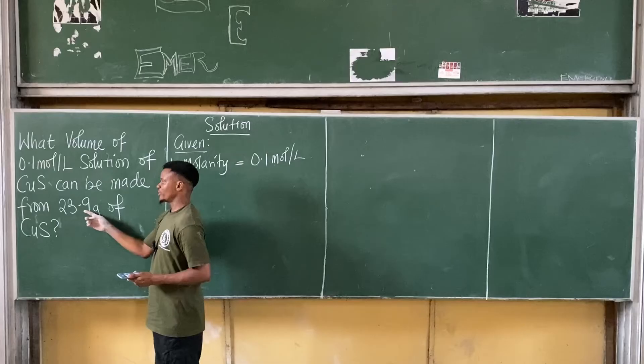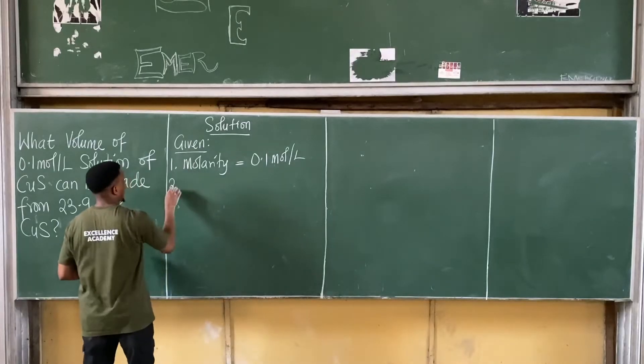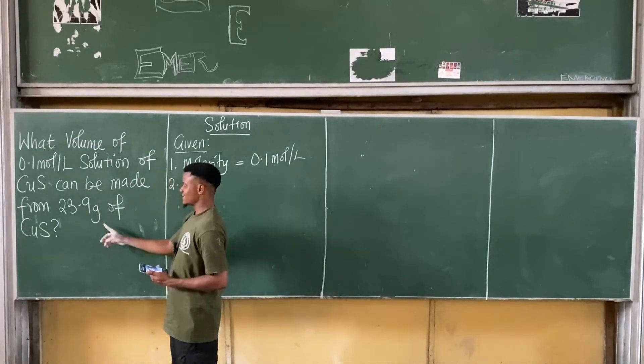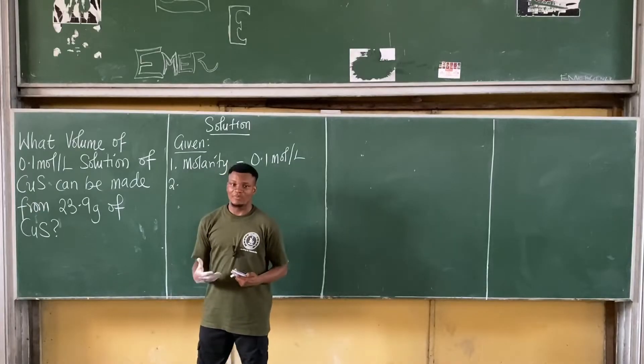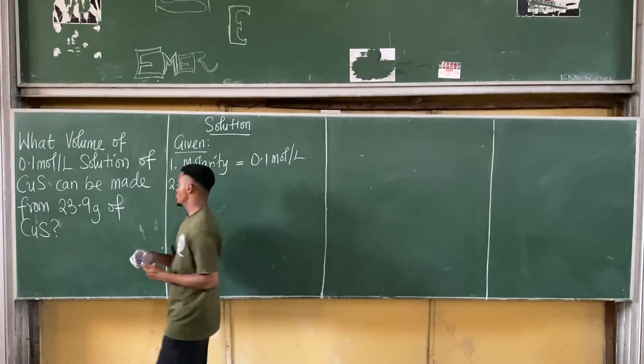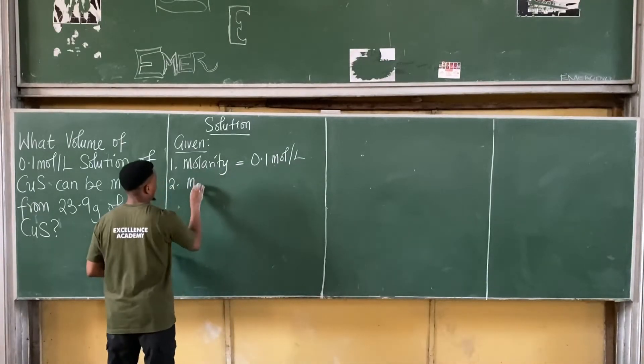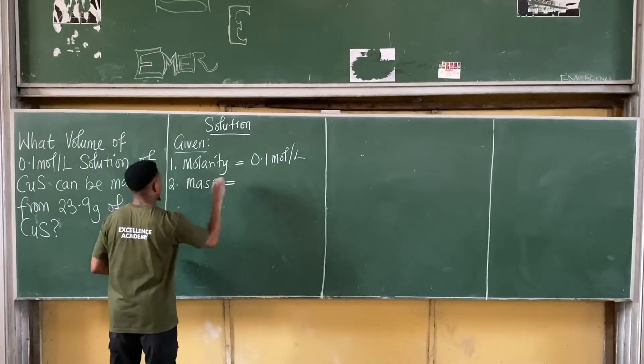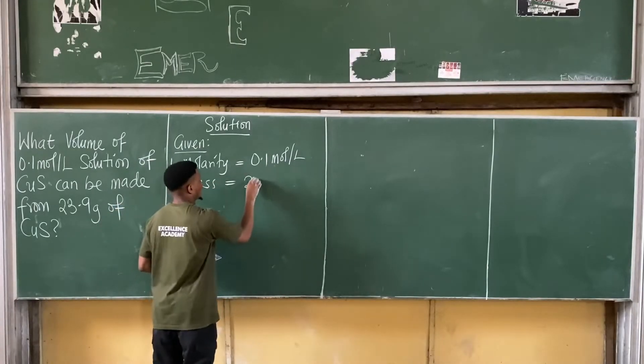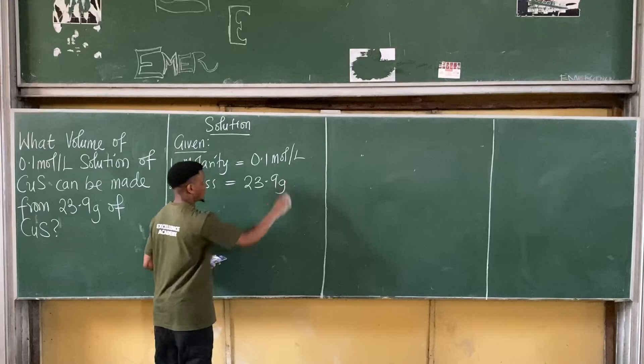Also, I'm giving 23.9. The SI unit here is gram, and gram is used to measure mass. So I'm giving the mass of the compound. Mass has been equal to 23.9 gram.